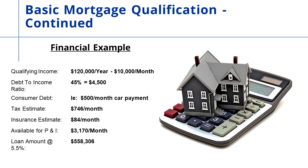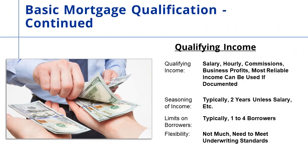Interest rates move every day, but let's say we have an interest rate of 5.5% — that would give us a loan amount of $558,306. What kind of income qualifies? Virtually any type of income. The issue is how long it has to be seasoned. Contractual income like a salary is easiest because you have a contract. But we can use hourly, commissions, business profits, and seasonal employment. If it's not contractual, it typically has to be seasoned over two years.